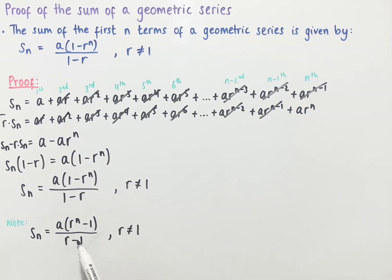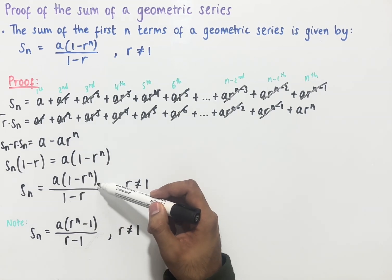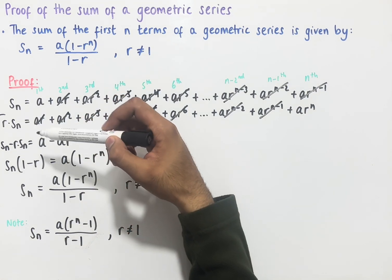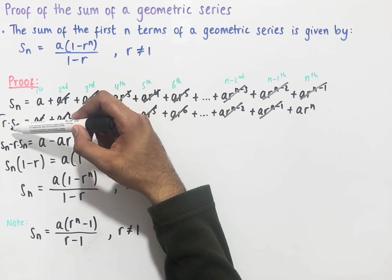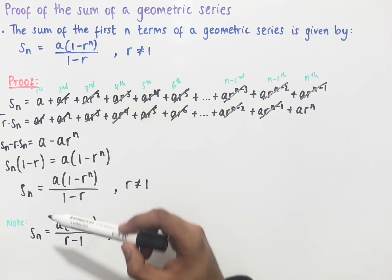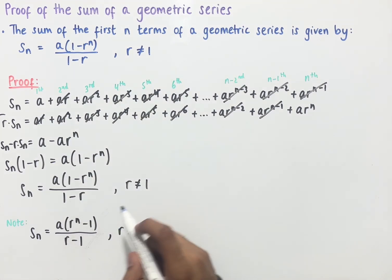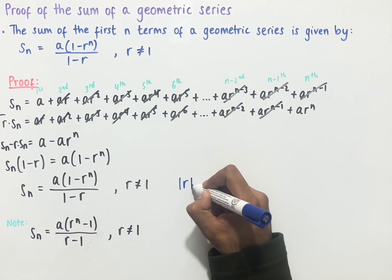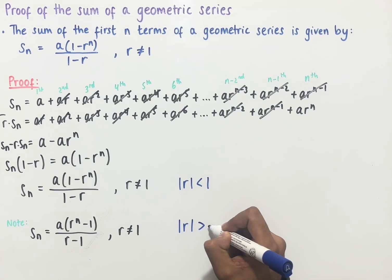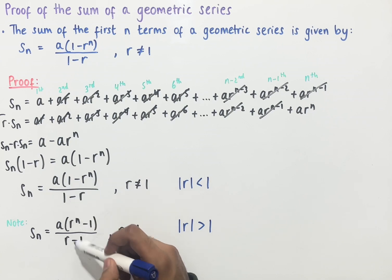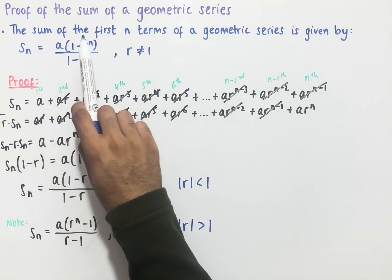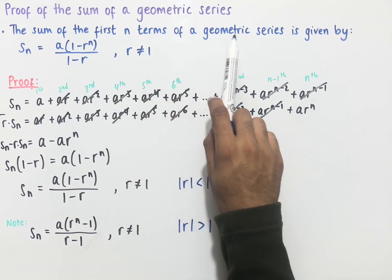We get this alternate form by either multiplying the formula by minus 1 in both the numerator and denominator, or when we took away the sums, we could do the second sum minus the first sum instead, and this would result in this formula. The first formula is useful when the modulus of r is less than 1, and the second formula is useful when the modulus of r is greater than 1, because it allows us to work with positives where possible. And that is the proof of the sum of the first n terms of a geometric series.